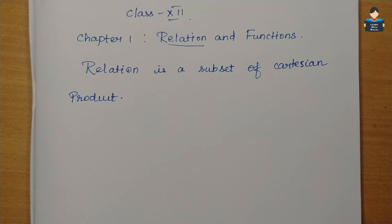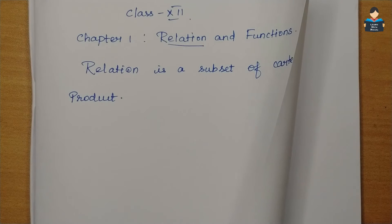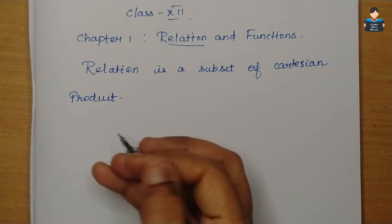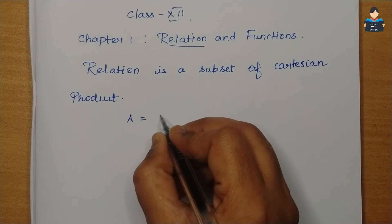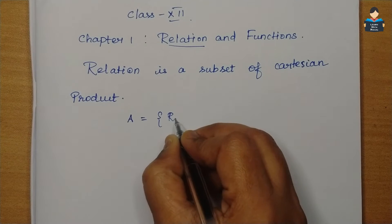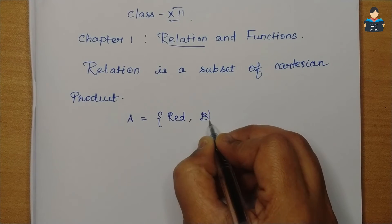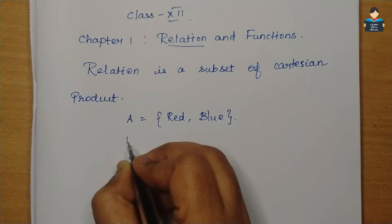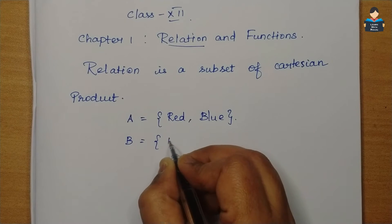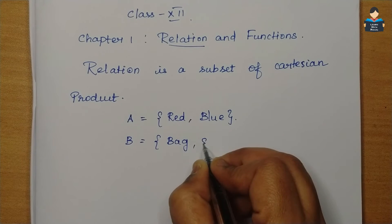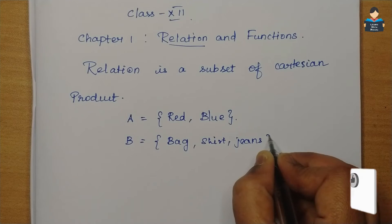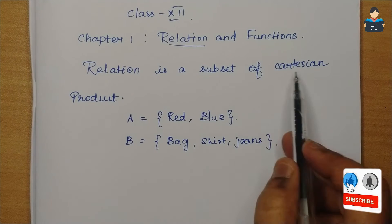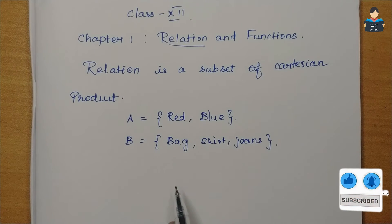Let's look at the Cartesian product. We have two sets. Set A contains colors: red and blue. Set B contains: bag, shirt, and jeans. What is the Cartesian product of these sets?